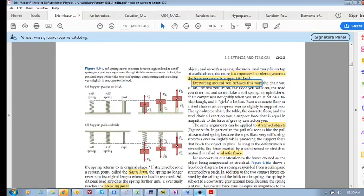Everything around you behaves this way - the chair, your bed, the floor, the road. For example, a soft chair that you're sitting on behaves like a soft spring. A hard chair that you're sitting on behaves like a stiff spring, or even something like a concrete floor.